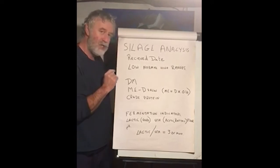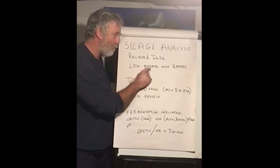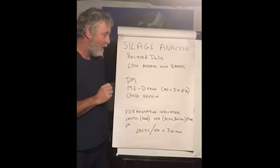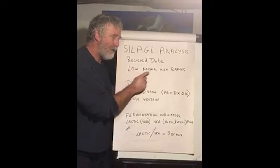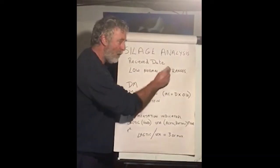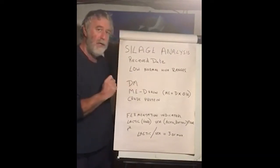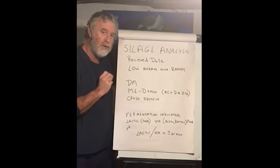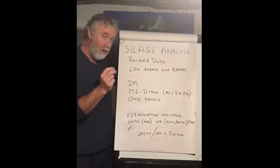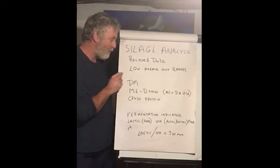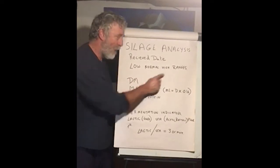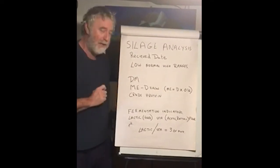On many of the analysis sheets you have a low, normal, high range just above the analytes. That is nothing to do with whether that's what you want — you don't want high for everything. It's about where that sits within all the samples they've been analysing over the past year or so. So for ammonia, if you've got low ammonia that's excellent. If you've got high sugar, that's excellent.